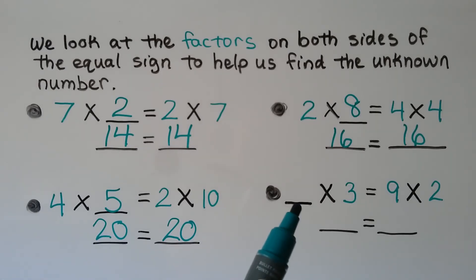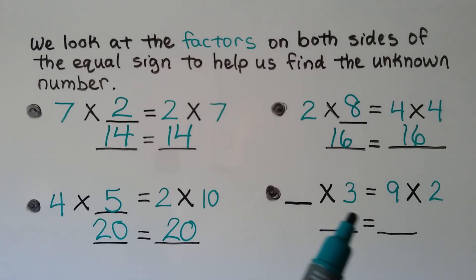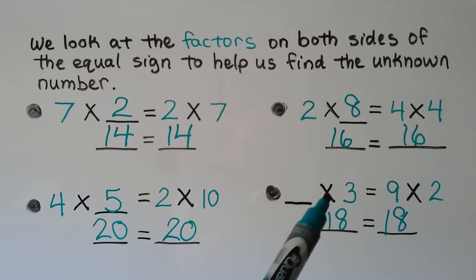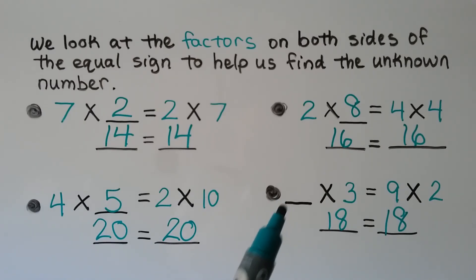For this one, an unknown number times 3 is equal to 9 times 2. If we find the product of 9 times 2, it'll help us. 9 times 2 is equal to 18, which means this side must also be equal to 18. An unknown number times 3 is equal to 18 — the answer is 6. 6 times 3 is equal to 18. That means 6 times 3 is equal to 9 times 2.